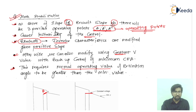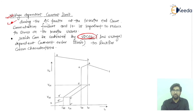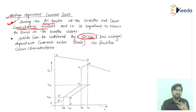Now if we talk about the voltage dependent current control, that is actually called VDCOL — the low voltage dependent current operating control. During an AC fault at the inverter end, commutation failure occurs, so it is important to reduce the stress on the inverter valves.